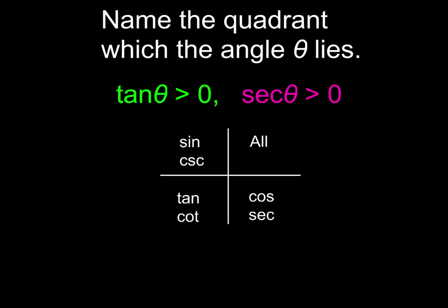Name the quadrant which the angle theta lies. So again, I'm going to go x's and o's. Tangent is going to be x, and then secant is going to be my o. So tangent theta, I want tangent theta to be greater than zero, which is positive. So that's going to be in quadrant one and over here in quadrant three. Secant, I want secant to also be positive. So that's going to be in quadrant one and down here in quadrant number four. The winning quadrant that has an x and an o in it for these two conditions is quadrant number one.